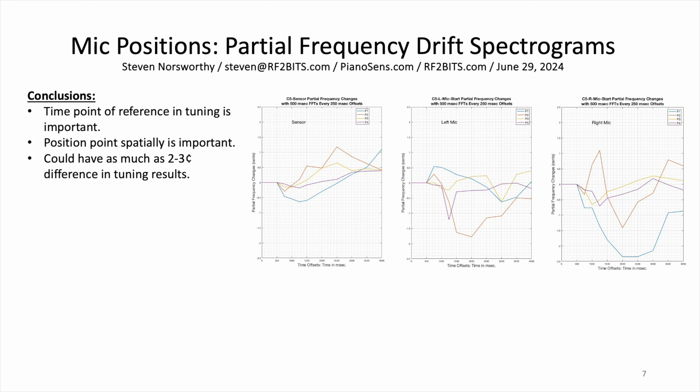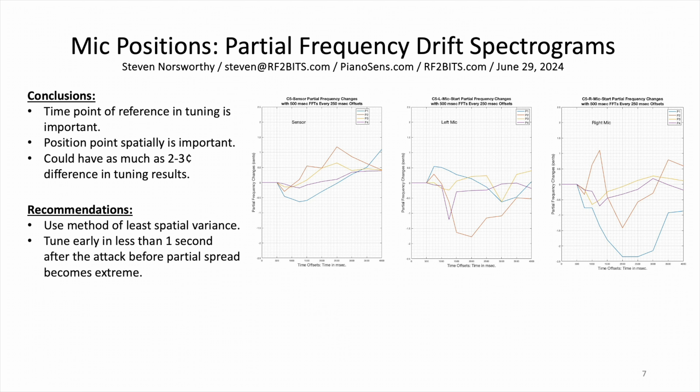This presentation was about spatial position and eigenmode resonances tilting the spectrum. In the extreme case of the right mic, there is a three-cent spread between the peak of the second partial and the trough of the first partial. That's a lot of spread. My recommendations are: number one, use a method of least spatial variance; and number two, tune early — in less than one second after the hammer attack — before partial spread becomes extreme.